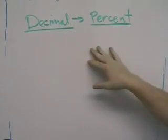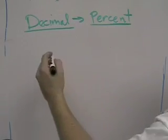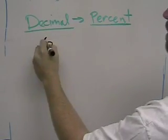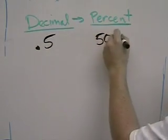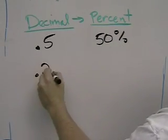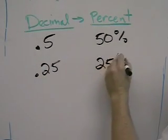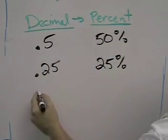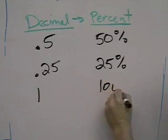To turn a decimal into a percent, we begin with some common decimals that we all know. 0.5 we all know is 50%, 0.25 we all know is 25%, and we all know that one whole is 100%.